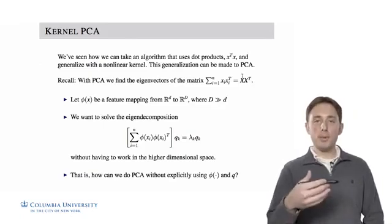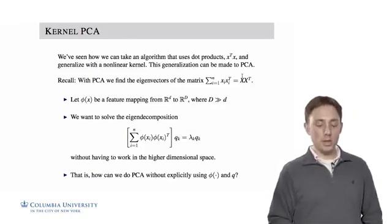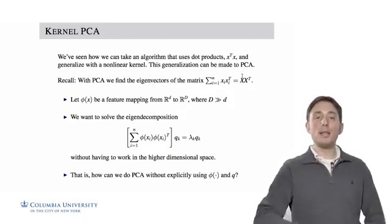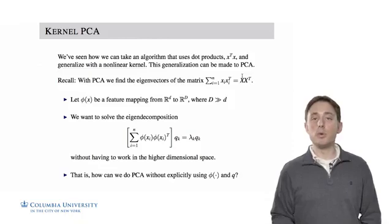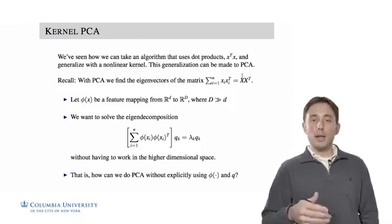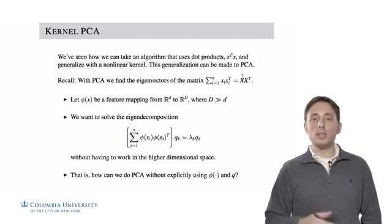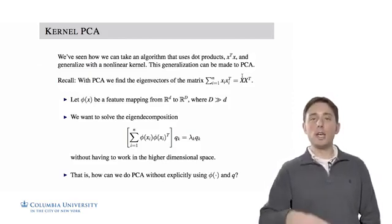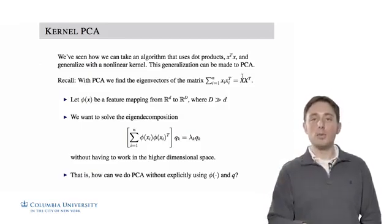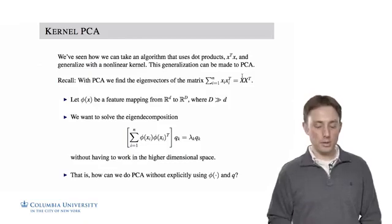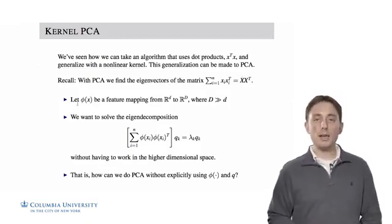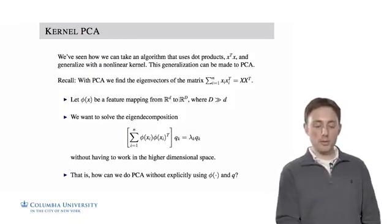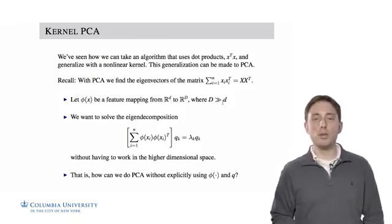Now let's map the data to higher dimensions. It's funny that we're discussing a dimensionality reduction technique, and now we're going to map the data to even higher dimensions before doing dimensionality reduction. But hopefully in later slides it will be very convincing that this is actually a smart thing to do — that projecting to much higher dimensions before projecting to a much lower dimension can do even more for us. So let's let phi be our projection of the data point x to a much higher dimension from d to capital D, where capital D is much greater than little d.